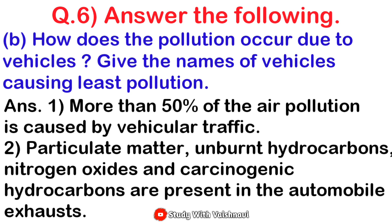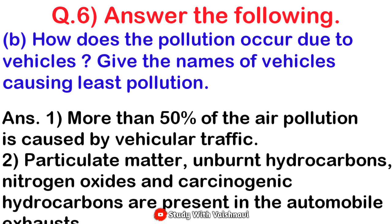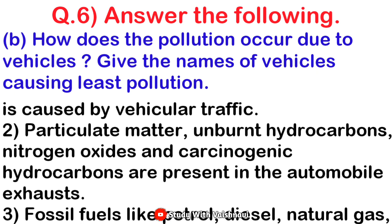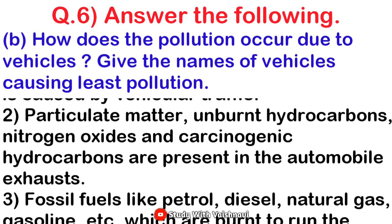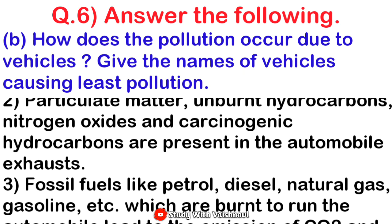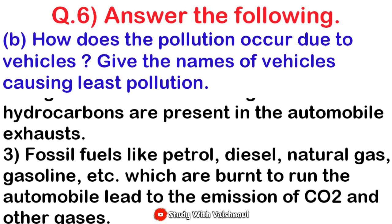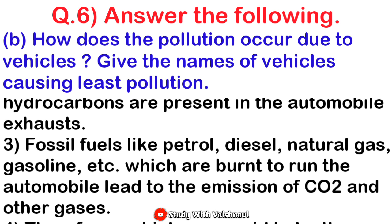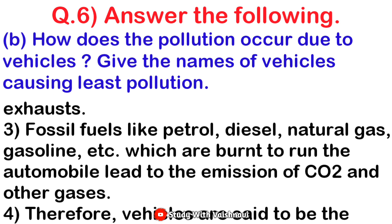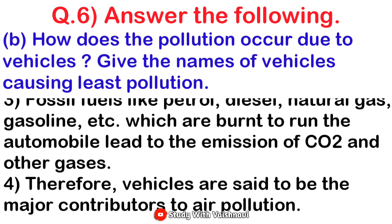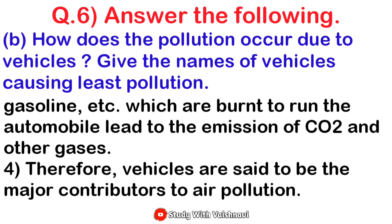Next question: what pollution occurs due to vehicles? Name the vehicles causing lead pollution. Points: first — more than 50 percent of air pollution is caused by vehicular traffic. Second — particulate matter, urban hydrocarbons, nitrogen oxides, and carcinogenic hydrocarbons are present in automobile exhaust. Third — fossil fuels like petrol, diesel, natural gas, gasoline, etc., burned to run automobiles, lead to the emission of CO₂ and other gases. Fourth — therefore, vehicles are seen to be the major contributors to air pollution.